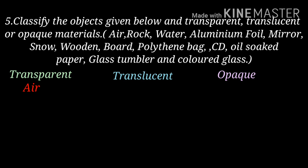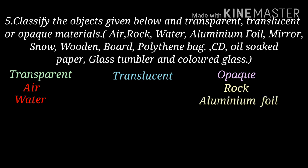Second: rock — it comes under opaque. Rocks come under opaque material. Next: water — it comes under transparent. Next: aluminium foil — it doesn't send light to the opposite side, so it comes under opaque.